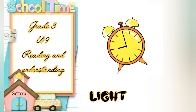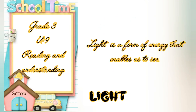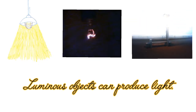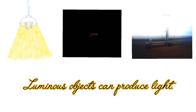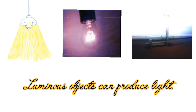Assalamu alaikum Grade 3 students. Today we will study chapter number 9: Light. Light is a form of energy that enables us to see. I have made here three pictures of luminous objects. Luminous objects are those that can produce light.